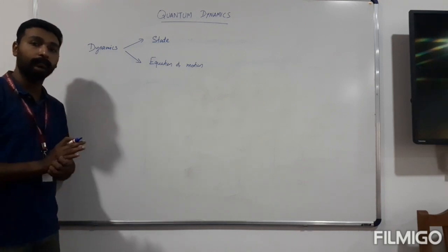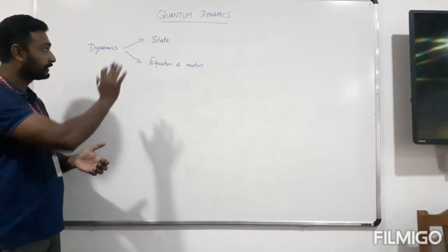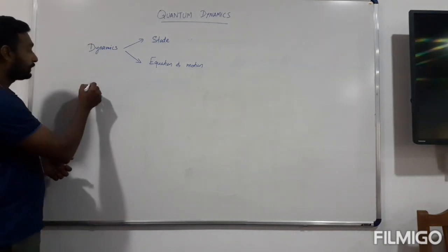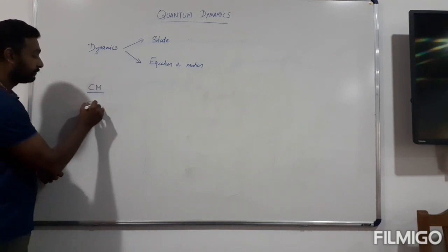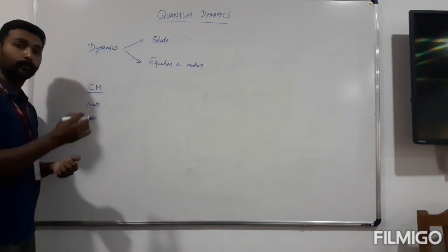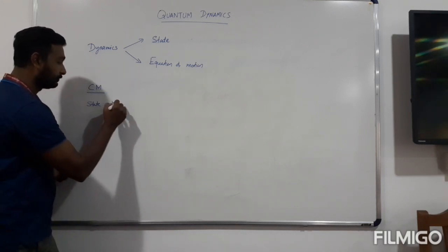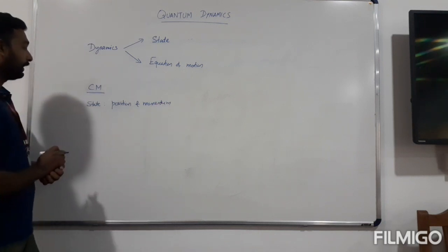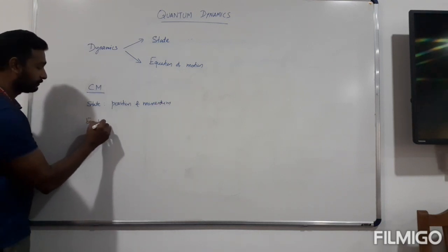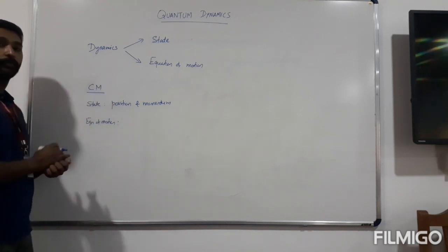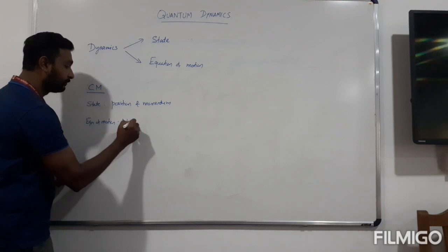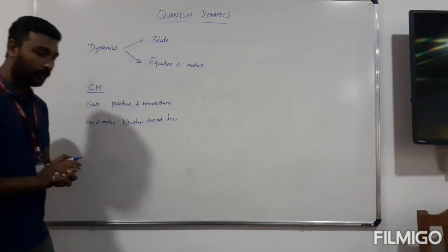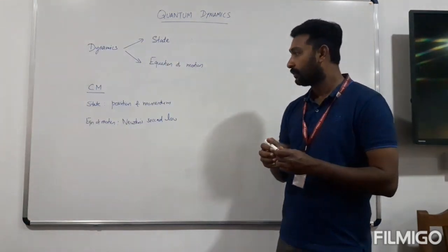These are the main parts of any dynamics, whether classical or quantum. For example, in classical mechanics, the state of the system is defined by position and momentum, and the equation of motion which gives the time evolution of the state is simply Newton's second law.